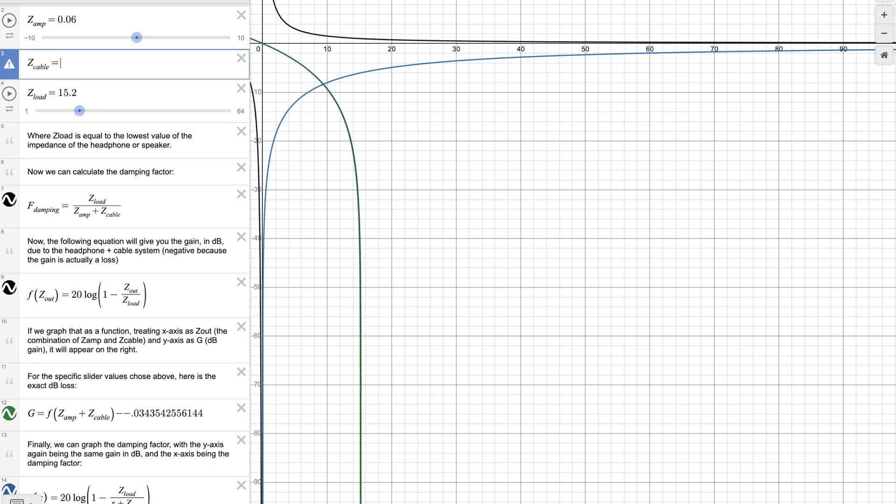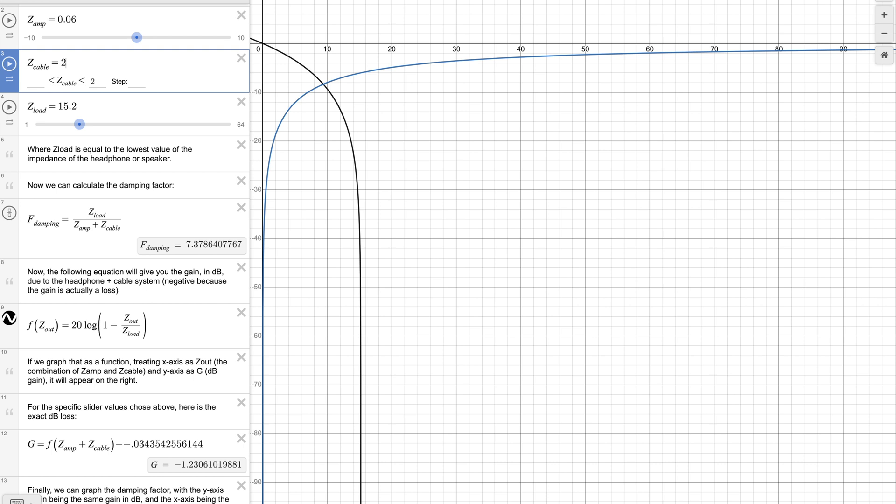Now let us type the impedance of the Linem cable, which is 2 ohms. We have a drop of 1.23 dB, which is very audible.